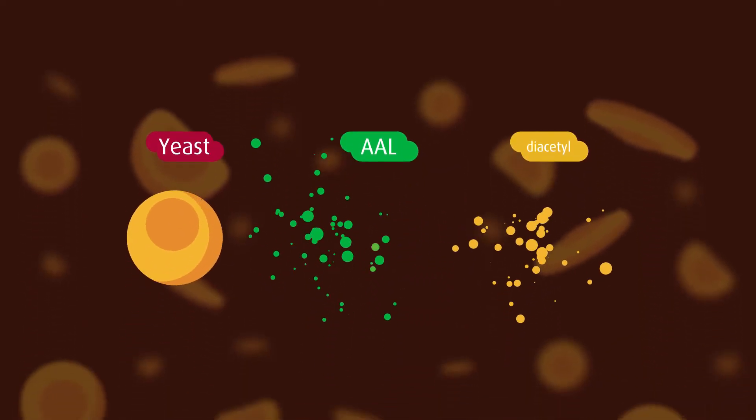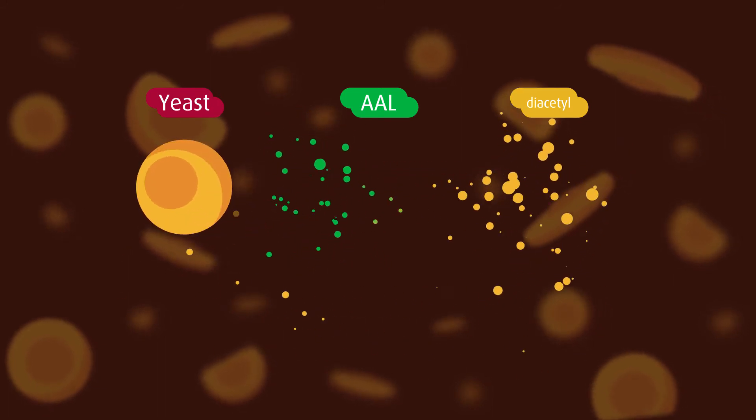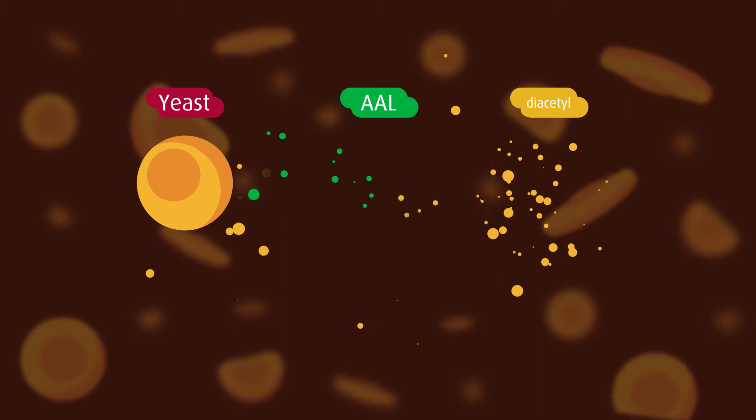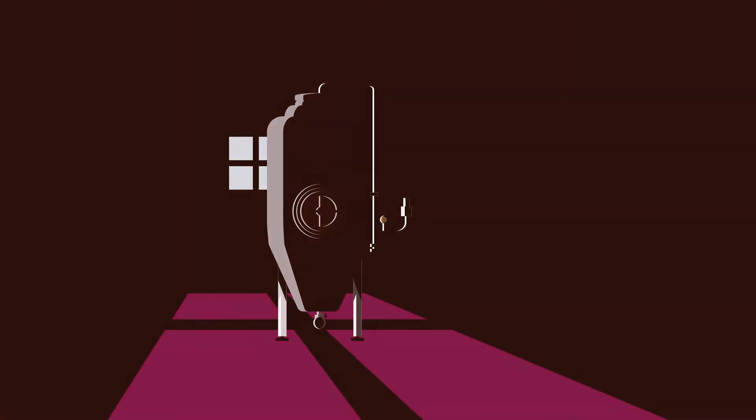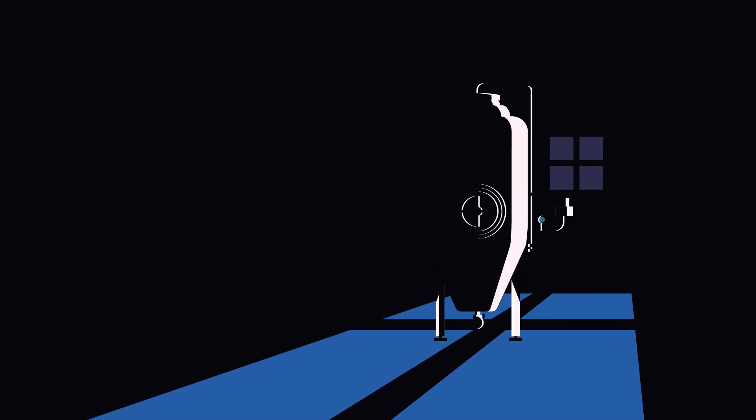Diacetyl is eventually removed by the yeast, but the bottleneck makes both AAL and diacetyl stick around when fermentation ends. The yeast is waiting for AAL to be converted before it can fully remove the diacetyl.